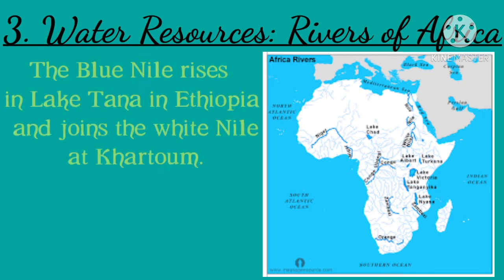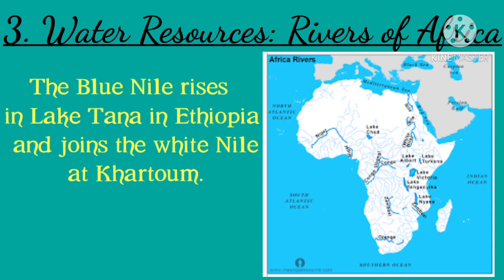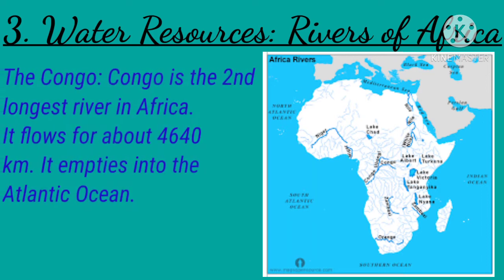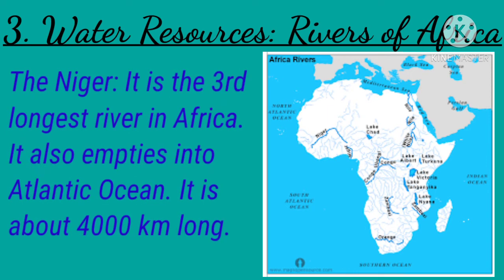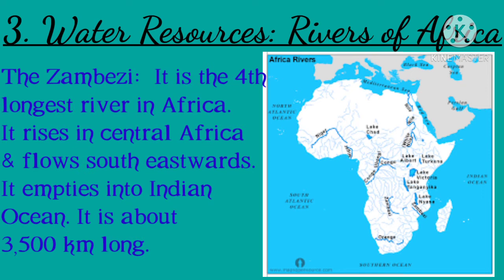The Blue Nile rises in Lake Tana in Ethiopia and joins the White Nile at Khartoum. The Congo is the second longest river in Africa, flowing about 4,640 kilometers and emptying into the Atlantic Ocean. The Niger is the third longest river in Africa, also emptying into the Atlantic Ocean, about 4,000 kilometers long.